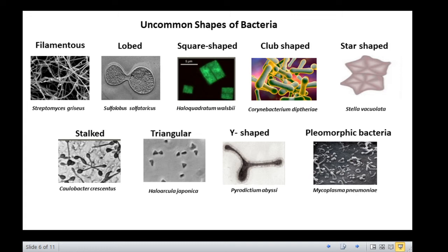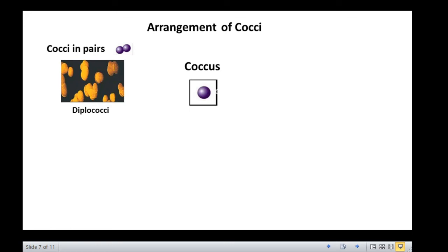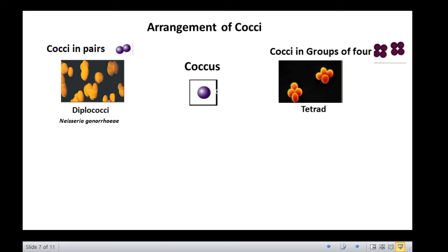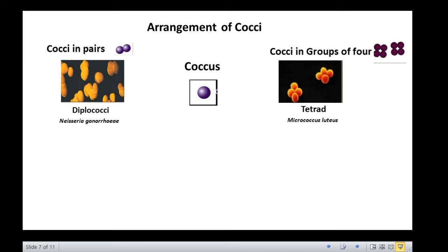Bacteria show a wide variety of arrangement of cells, and this is a very important characteristic for identification of unknown bacteria. We will discuss the different arrangements of spherical bacteria, the coccus. If they appear in pairs, then they are called diplococci. Neisseria gonorrhoeae is a common example. If the cocci are in groups of four, they are called tetrads, and an example is Micrococcus luteus. Cocci can also be arranged in chains, and in this case, they are called streptococci, of which Streptococcus mutans, the oral bacterium, is an example.